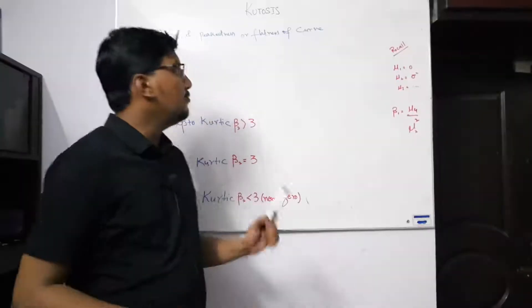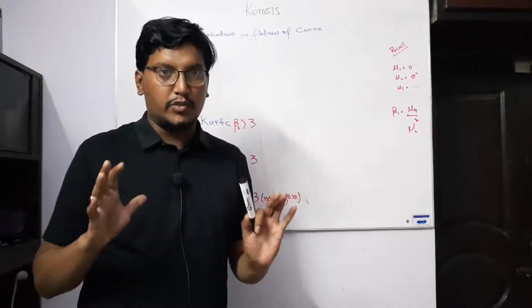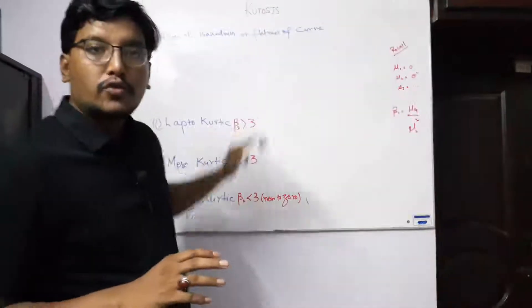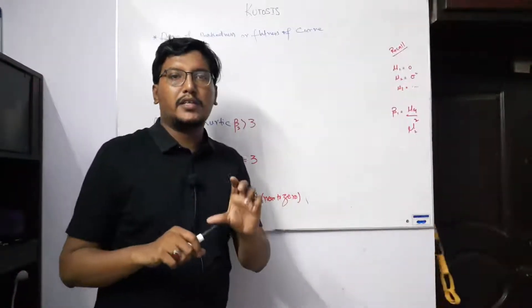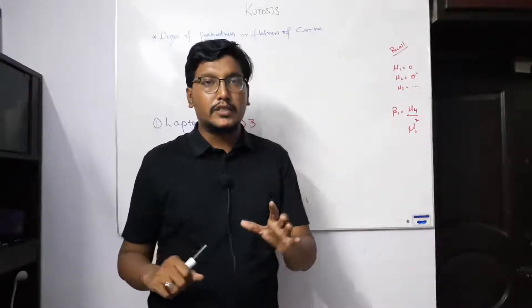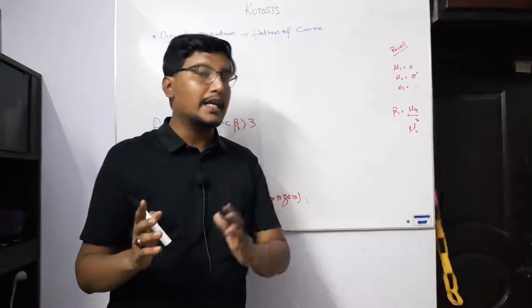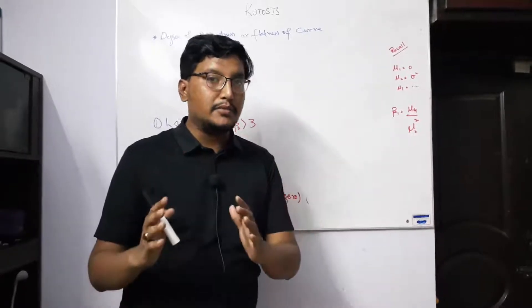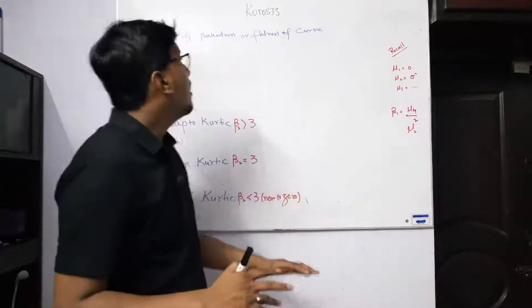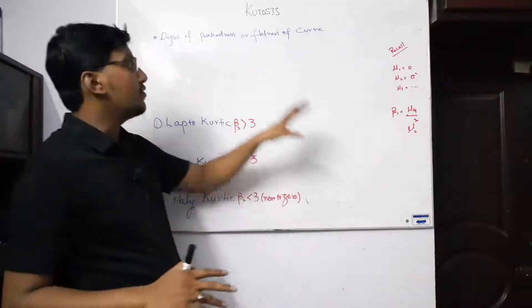Hello, assalamu alaikum. Now after the understanding of skewness, the relevant topic is kurtosis. Kurtosis and skewness are basically joint topics. We discussed skewness and saw the distribution shape, whether symmetrical or asymmetrical. But another concept of the data distribution which is very important is called kurtosis.